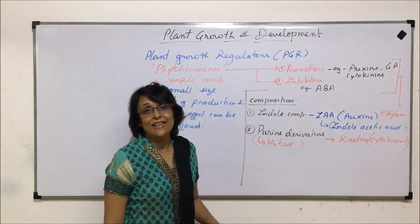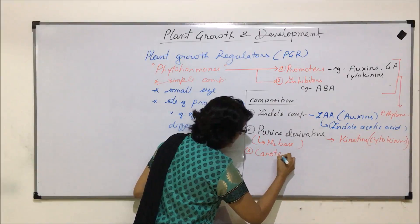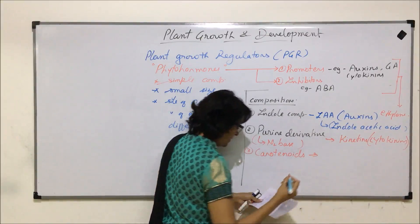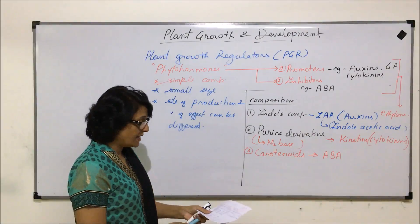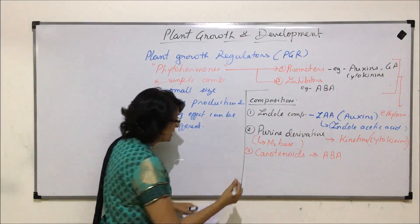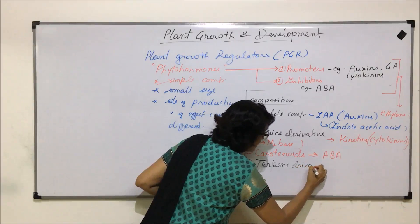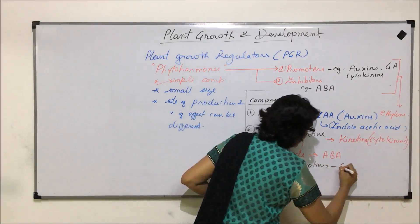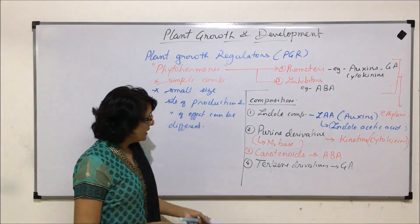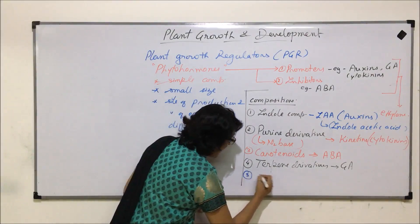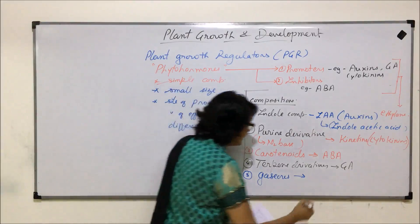The third category is derived from carotenoids — abscisic acid is placed in this category, so abscisic acids are derivatives of carotenoids. The next category is terpene derivatives — gibberellic acids are derivatives of terpenes. The fifth category is gaseous, and in the gaseous category there is only one: ethylene.